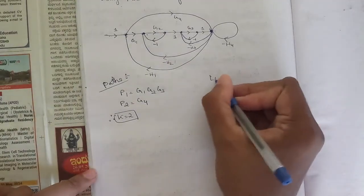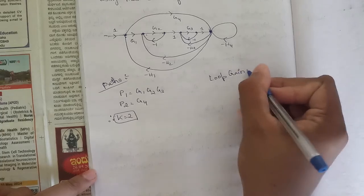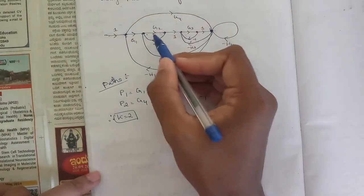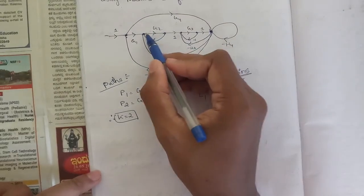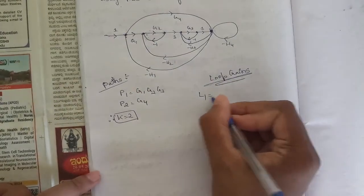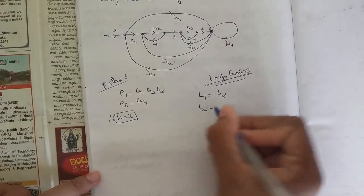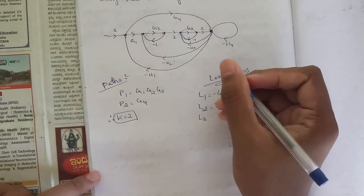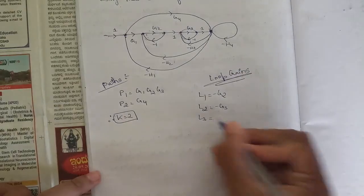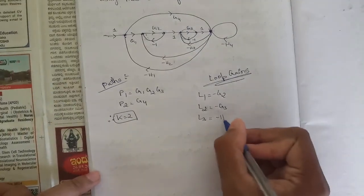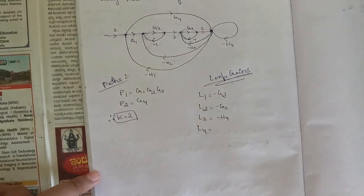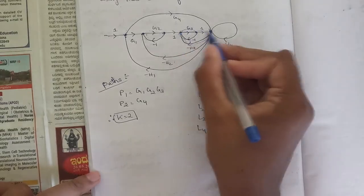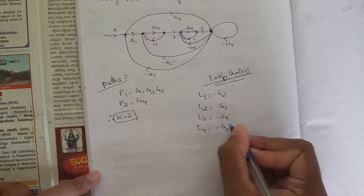Now let's see how many loop gains we have. The first loop L1 equals g2 into minus 1, so minus g2. The second loop L2 is g3 into minus 1, so minus g3. One more loop for h4, so L3 equals minus h4. Another loop is g3 into minus h3, so L4 equals minus g3·h3.